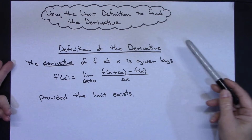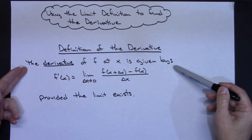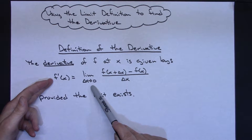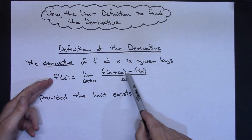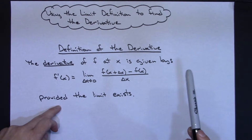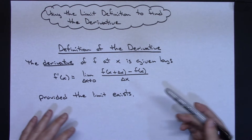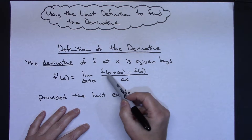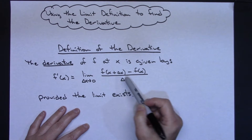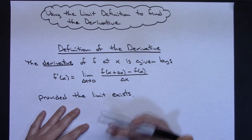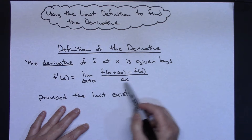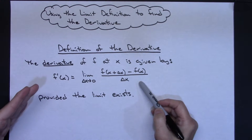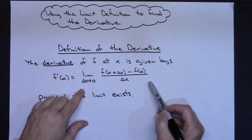The derivative of f at x is given by f prime of x, equal to the limit as delta x approaches zero of f of x plus delta x, minus f of x, all over delta x, provided that the limit exists. Now in a pre-calc course you should have worked with this — maybe it was x plus h and h — but you should recognize this is the difference quotient. We're just going to take the limit as delta x approaches zero of this difference quotient. This is the formal limit definition of a derivative.